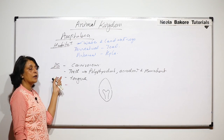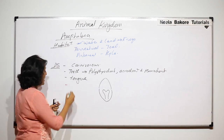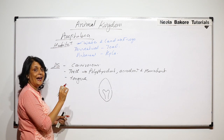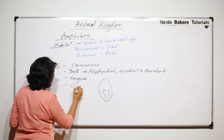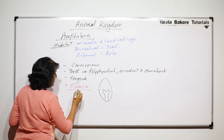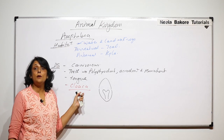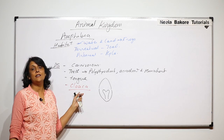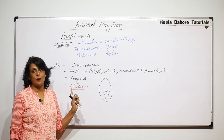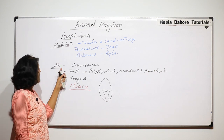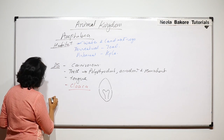At the other end of the digestive system is the cloaca, which is the common opening of the digestive system, excretory system, and reproductive system.